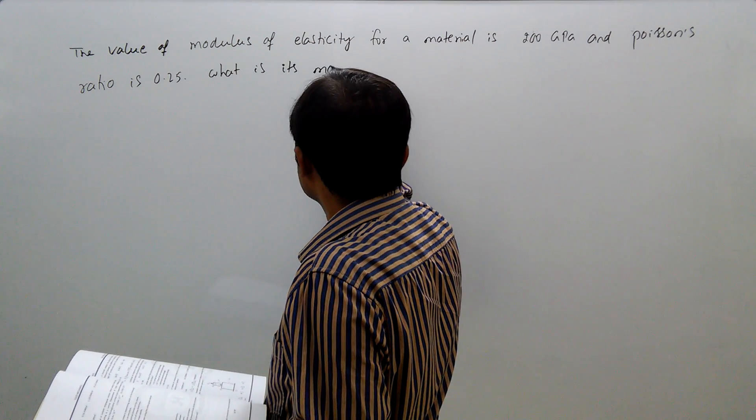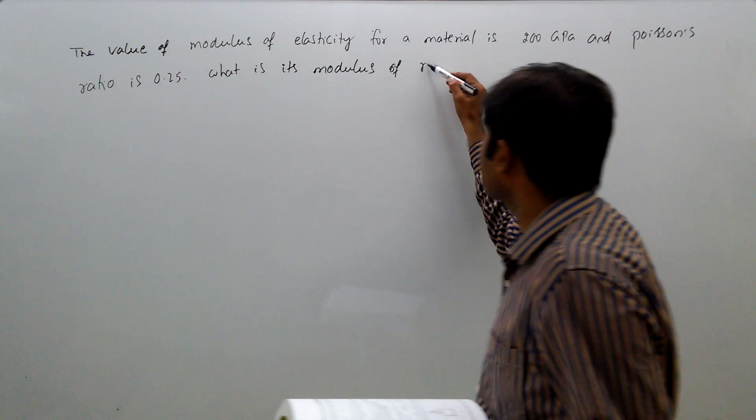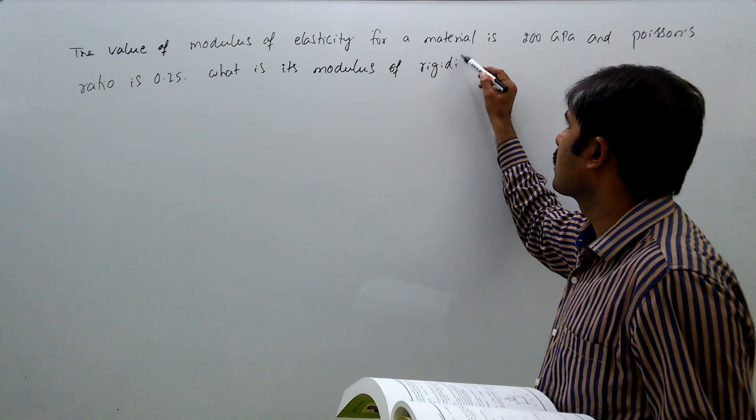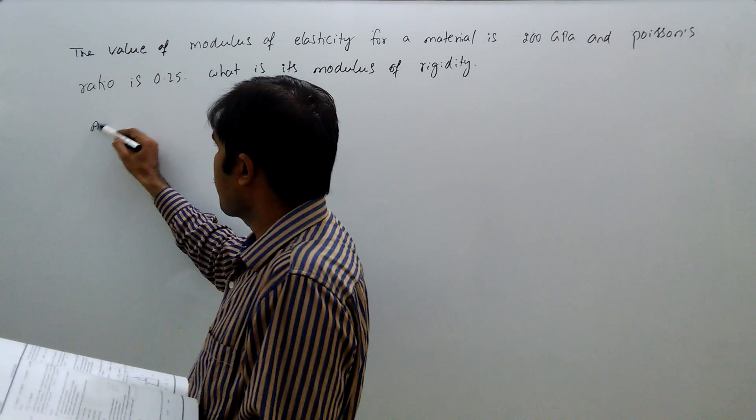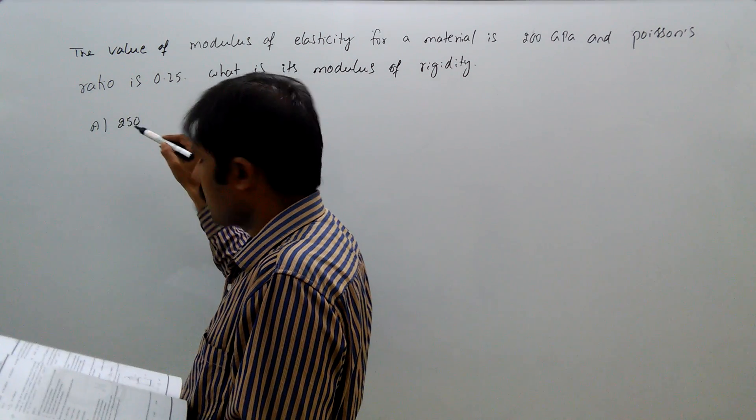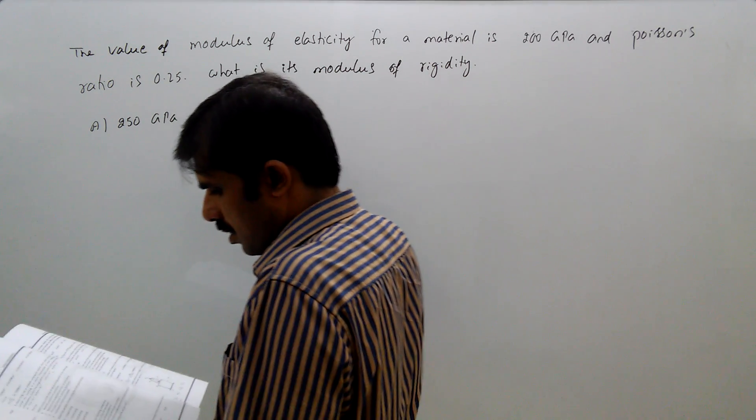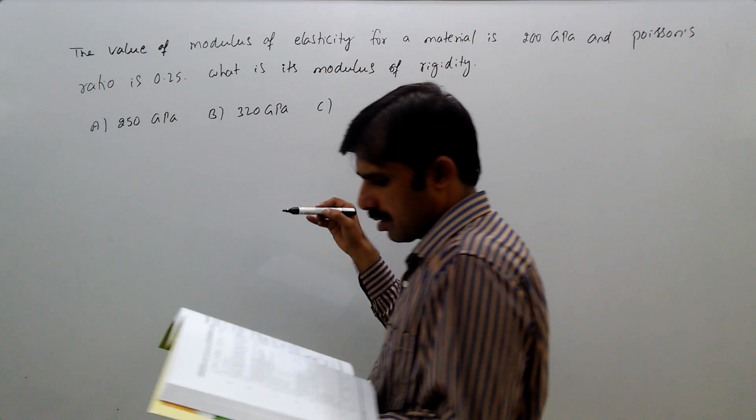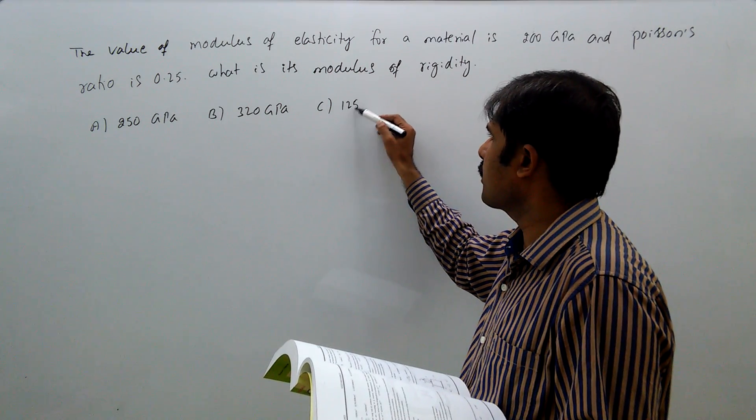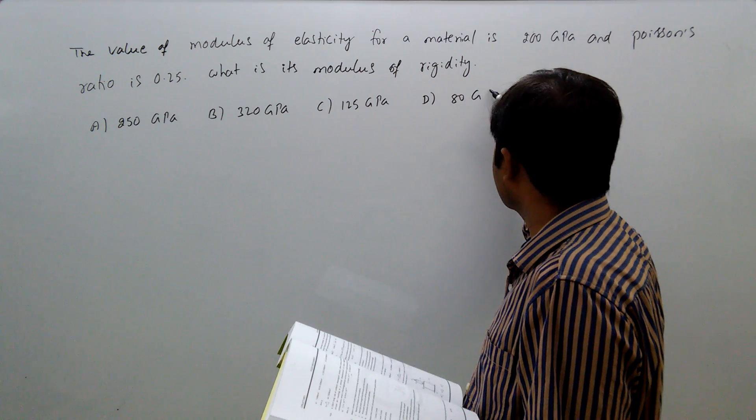Option A: 250 gigapascals, Option B: 320 gigapascals, Option C: 125 gigapascals, Option D: 80 gigapascals.